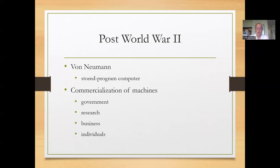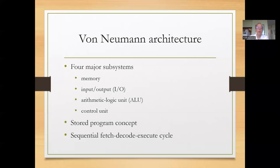You also saw vast commercialization of machines — from the government being the only entity that had computers, to moving them into research, to business, and finally to individuals, which came about in the 1970s and 1980s. The Von Neumann architecture had four major subsystems: memory, input/output, the arithmetic logic unit that did the computations, and the control unit that acted as the brain. Nowadays we usually combine the control unit and the ALU into the CPU, or central processing unit. Von Neumann also came up with the fetch, decode, and execute cycle, which you'll see in courses 266 and 410.